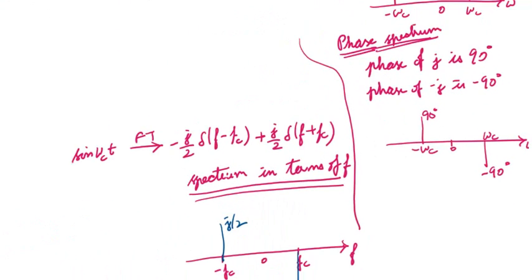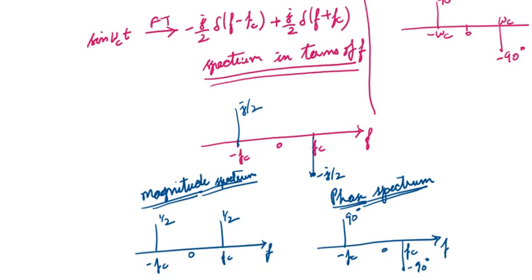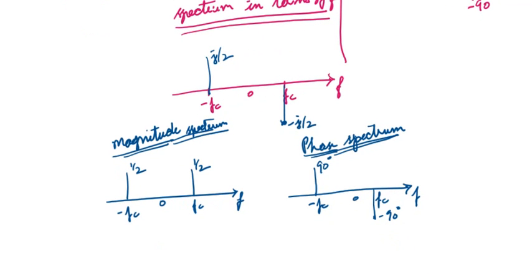Representing sin(ωct) in terms of f: when f = fc, it becomes −j/2, and when f = −fc, it becomes +j/2. The magnitude of j/2 is 1/2 and the magnitude of −j/2 is also 1/2. The phase of j/2 is +90° and the phase of −j/2 is −90°. This is the explanation of the Fourier transform of cos(ωct) and sin(ωct).